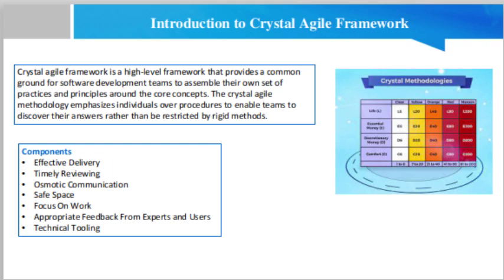What are the critical components of the Crystal Agile Framework? Crystal Framework has 7 key components, out of which the first 3 are mandatory and the rest are optional. The first component is effective delivery. Your work and efforts should reach the customers regularly, otherwise it will either be a waste of time or lack direction. There needs to be consistency in the kind of problems you solve for the users.